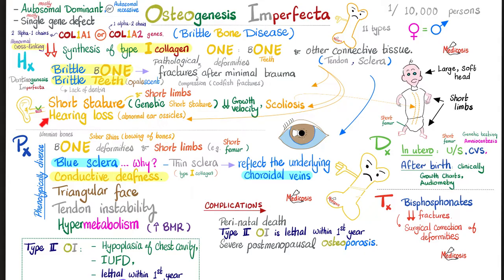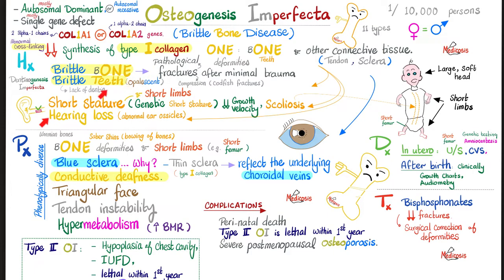Please do not make the mistake of saying type 2 osteogenesis imperfecta means the problem is in collagen type 2 — no. It's still collagen type 1. Key features: blue sclera, bone deformities and fractures, large soft head but short limbs — similar to achondroplasia. Don't forget scoliosis and short femur. Teeth may be opalescent — different colors — mostly brown-blue discoloration due to problematic dentin.